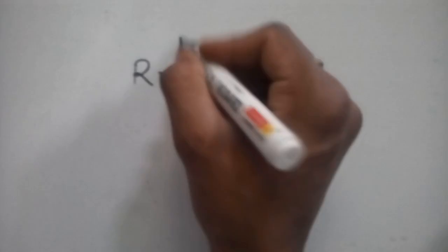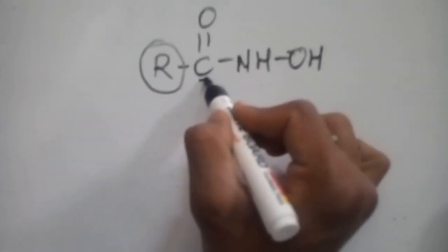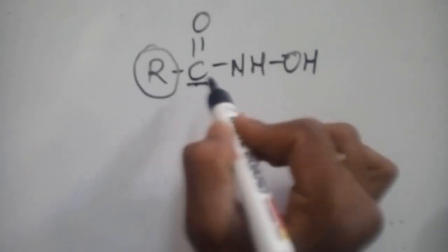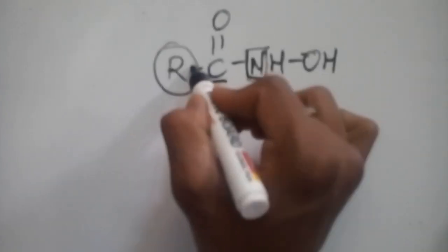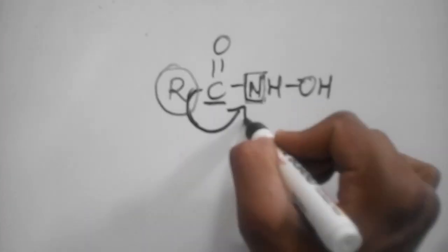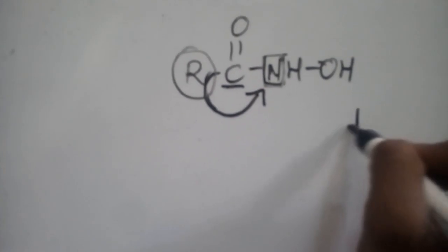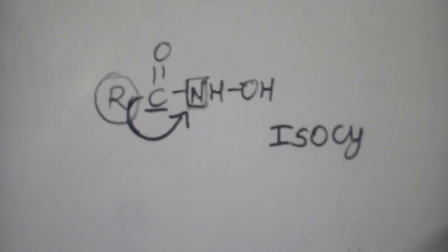In the hydroxamic acid, the migrating group is either an alkyl or aryl group. The point from which migration occurs is called the migratory origin, and the point to which it migrates is called the migratory terminus. The alkyl or aryl group transfers from the migratory origin to the migratory terminus to form the isocyanate — and this rearrangement is what we call Lossen rearrangement.